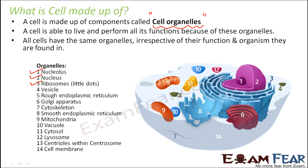Vesicles are like vessels present inside the cell. Then we have rough endoplasmic reticulum and smooth endoplasmic reticulum. The rough endoplasmic reticulum is the structure that has ribosomes (dots) over it — that is why it is called rough. The one without ribosomes is the smooth endoplasmic reticulum.